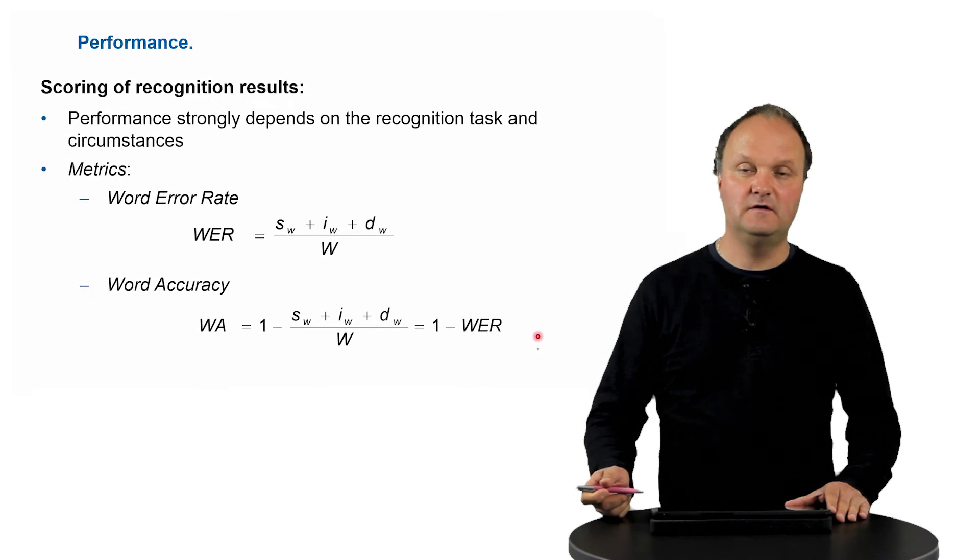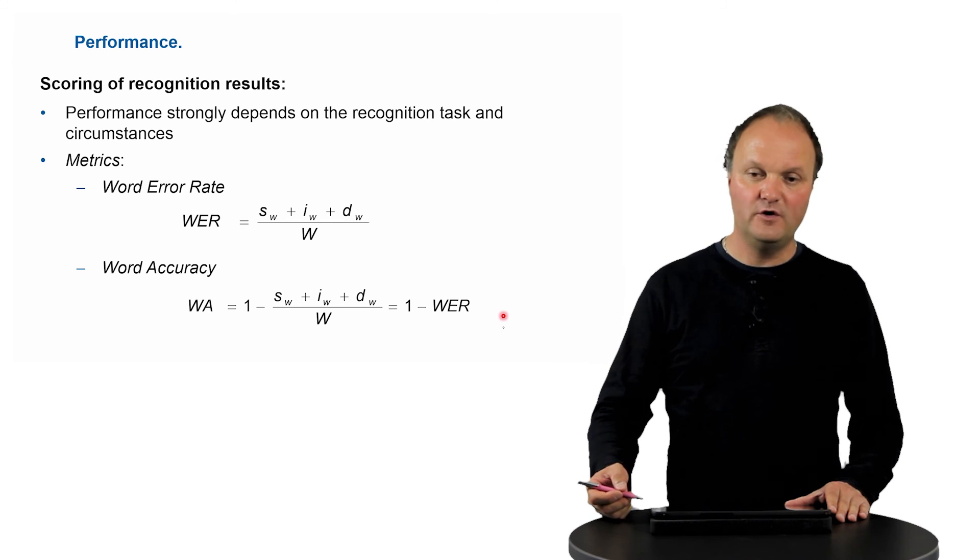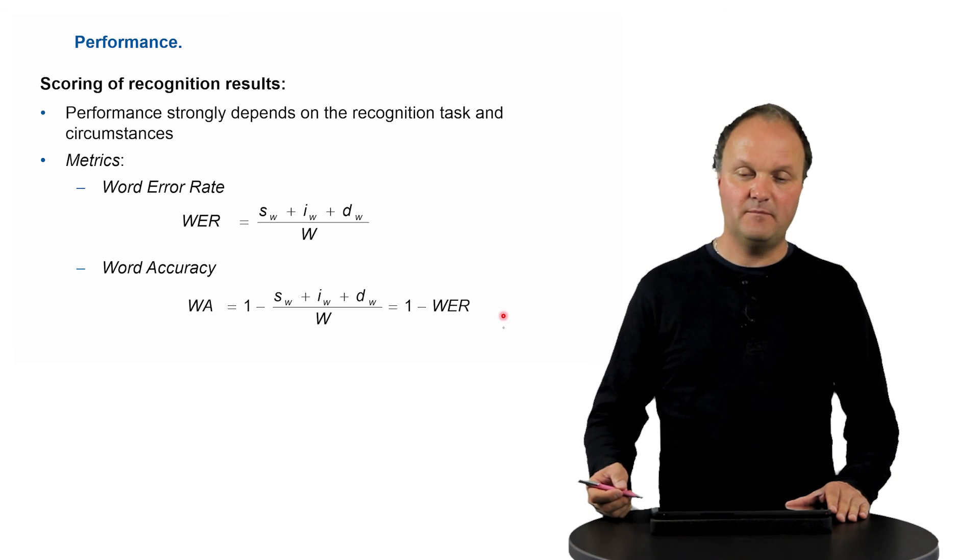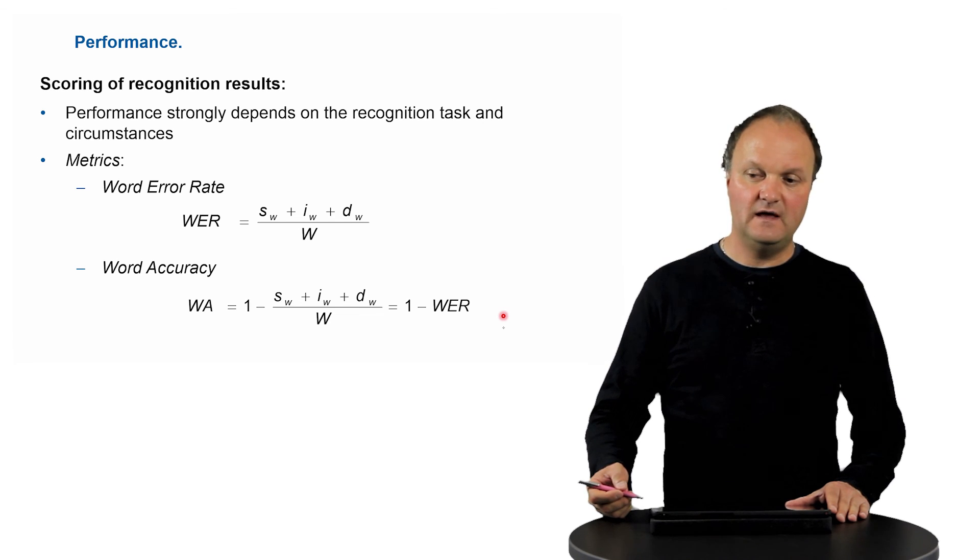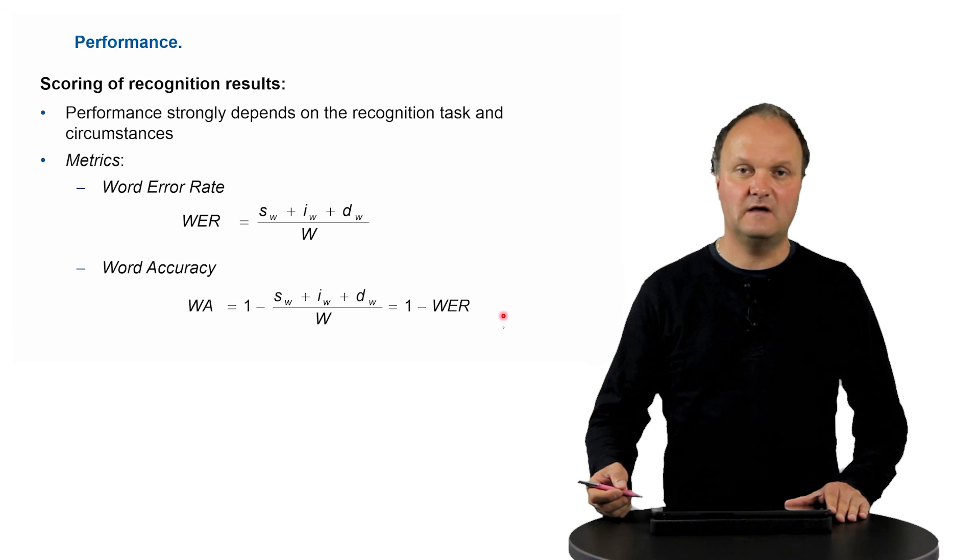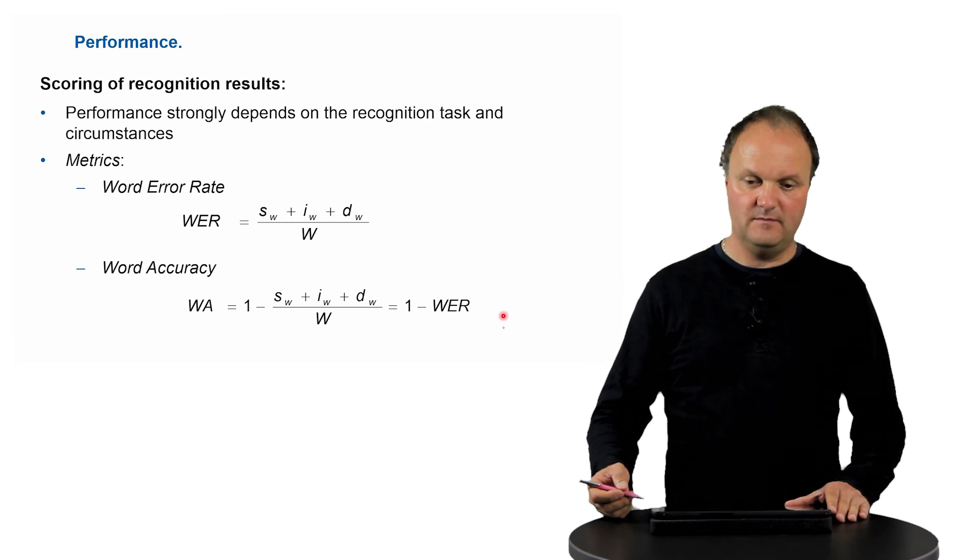Now, the word accuracy figures are quite different. So you have word accuracy of 99 point something percent for a very easy task. But that may easily drop to recognition accuracy of, let's say, 50 percent or 60 percent or 70 percent for a more complicated task in a more complex environment.